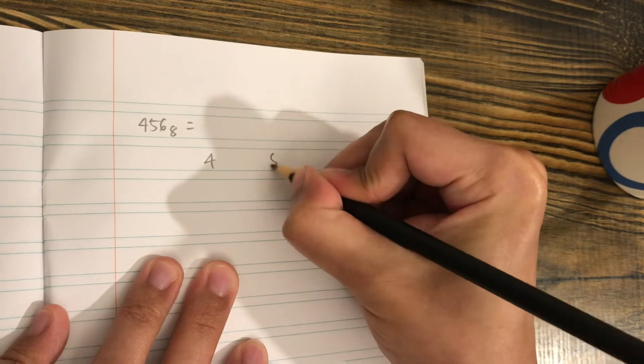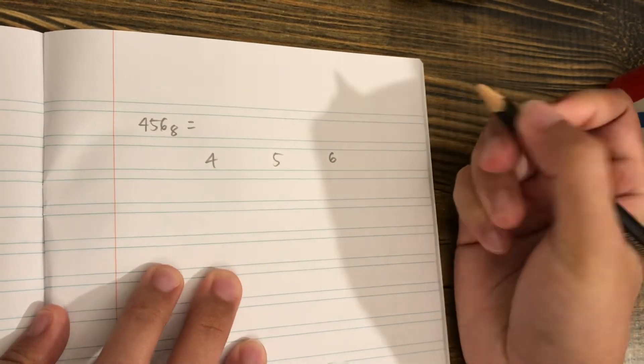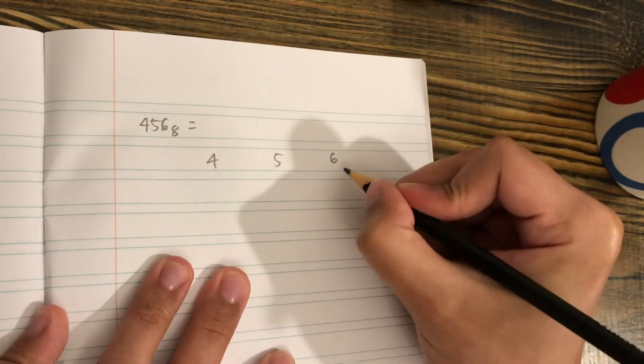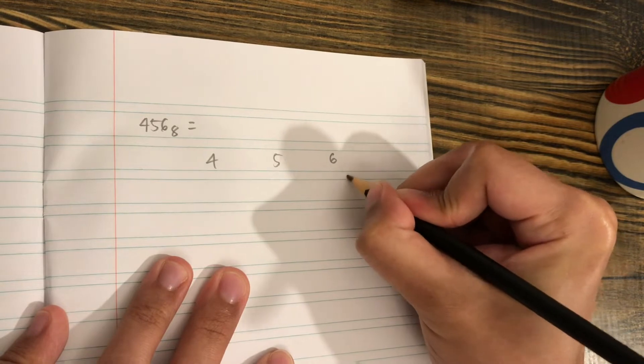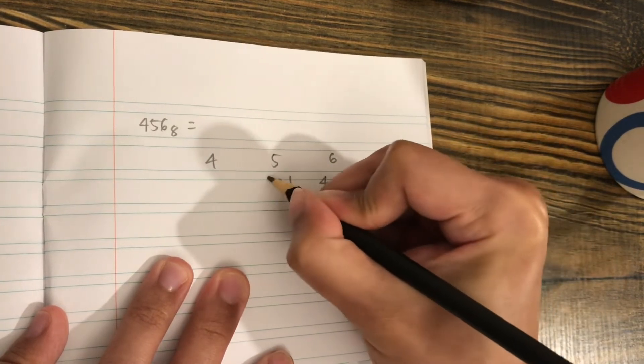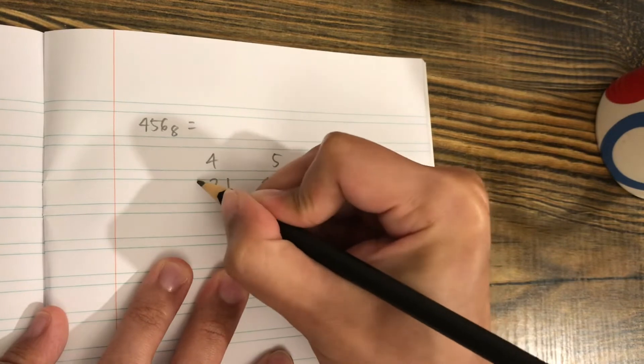4, 5, 6. Then we put the values again: 1, 2, 4; 1, 2, 4; 1, 2, 4.